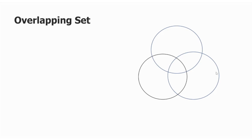We have to take a basic idea of this — you can skip a little bit if you already know it. If you have a set, it is A, B, and C. It is a whole circle.